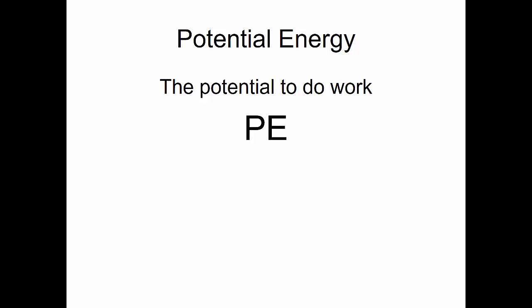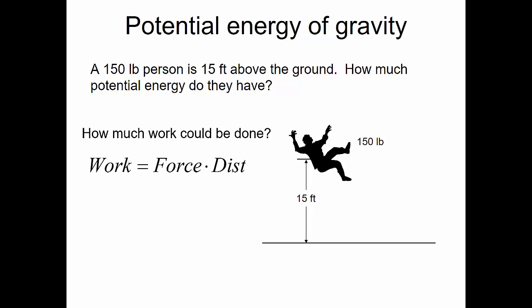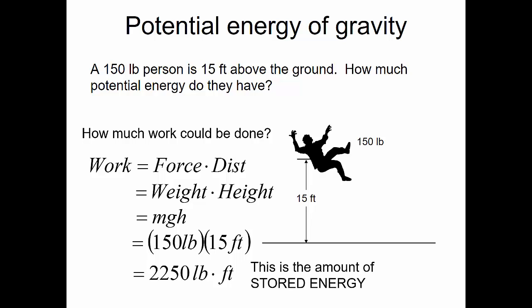Now let's talk about potential energy — the potential to do work. For gravity: when something is up high, it has the potential to drop and gain velocity. Potential energy due to gravity is mass times gravity times height, or weight times height. For example, a 150-pound person at 15 feet above the ground has potential energy equal to 150 pounds times 15 feet, which is 2,250 pound-feet of stored energy that could be converted to kinetic energy if the person were to drop.